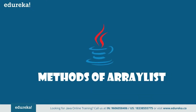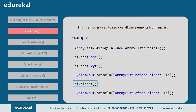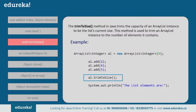Now let's dive into the various methods supported by ArrayList. First, the add method — this is used to insert a specific element at a specific position index in a list. Next, the clear method — this is used to remove all elements from the list. Next, trimToSize — this method trims the capacity of an ArrayList instance to the list's current size. So if you create an ArrayList of size 9 and only add three elements, calling trimToSize will reduce the size from 9 to 3.